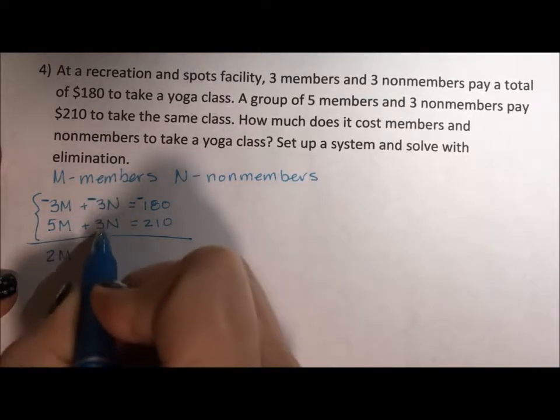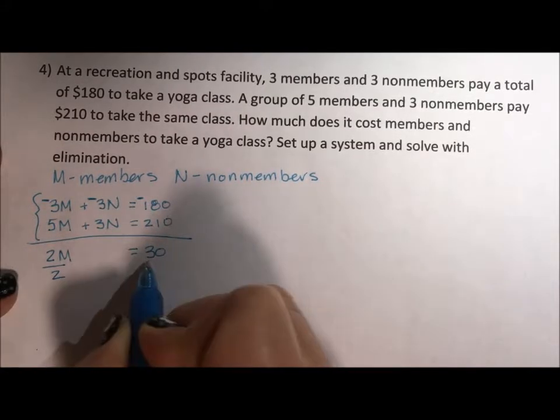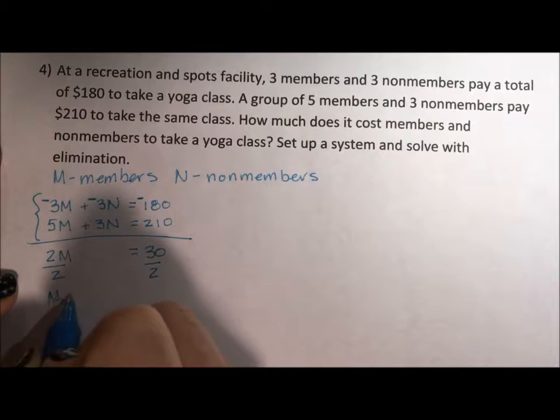I get 2M, they cancel, equals 30. I divide by 2, and M equals 15.